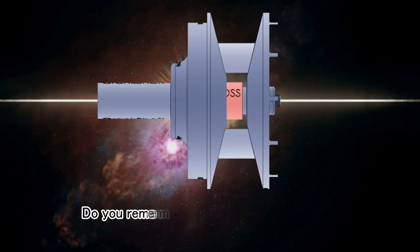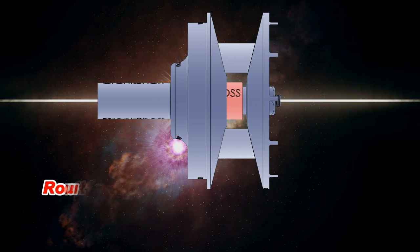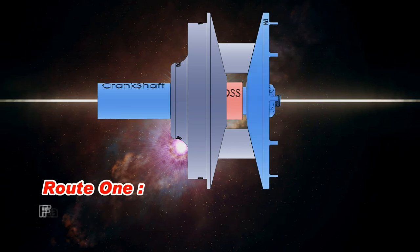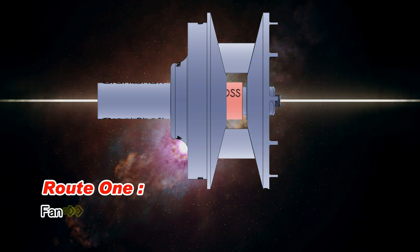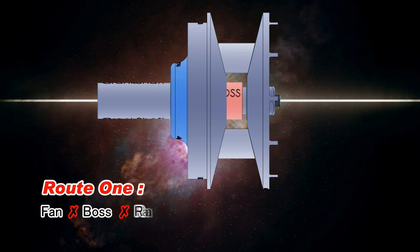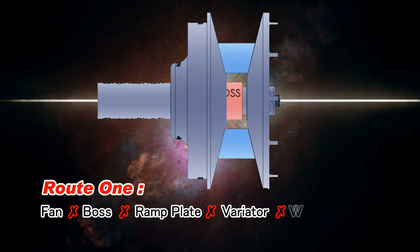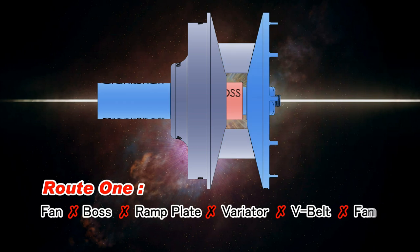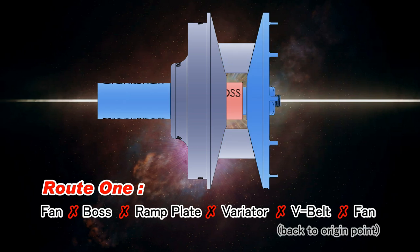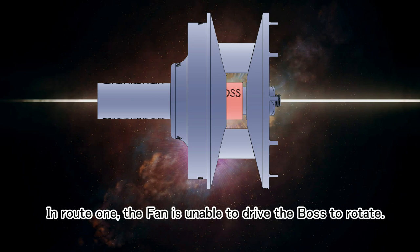Do you remember the power transfer process? Route one: fan, boss, back to origin point. In route one, the fan is unable to drive the boss to rotate.